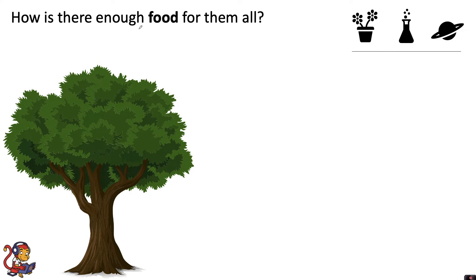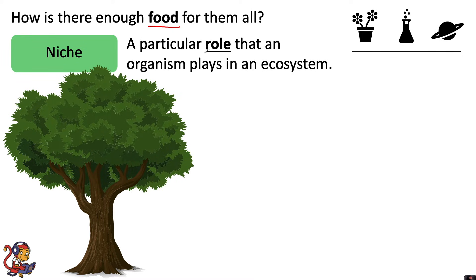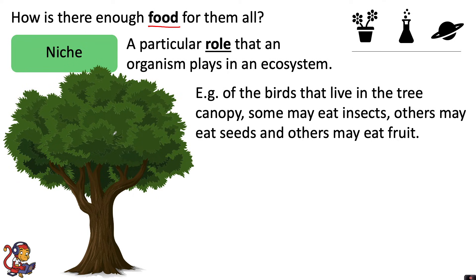Now let's think about the second question: how is there enough food for them all? Again, this is to do with niche, but this is a second definition. A niche can be a particular place where an organism lives, or it could be a particular role that an organism plays in an ecosystem. For example, of the birds that live in the tree canopy, some may eat insects, others may eat seeds, and others may eat fruit — so they've got different roles in the foods that they eat. Therefore many different species can live in this habitat because they're all occupying different niches, and not only would this be about food, but some animals do have a particular niche or particular role within an ecosystem.